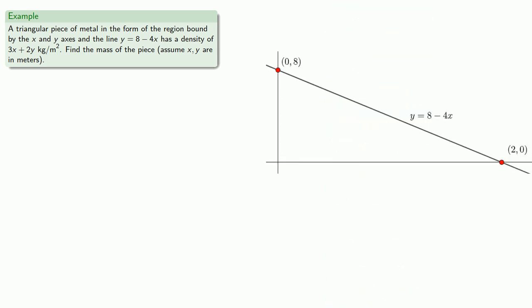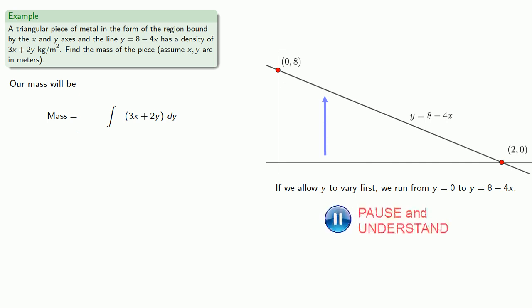If we allow x to vary first, we're going to run from x equals 0 to... well, while we could solve for x, let's not. That's because we've already solved for y. So if we allow y to vary first, we'll run from y equals 0 to y equals 8 minus 4x. Then we can allow x to vary from x equals 0 up to x equals 2.